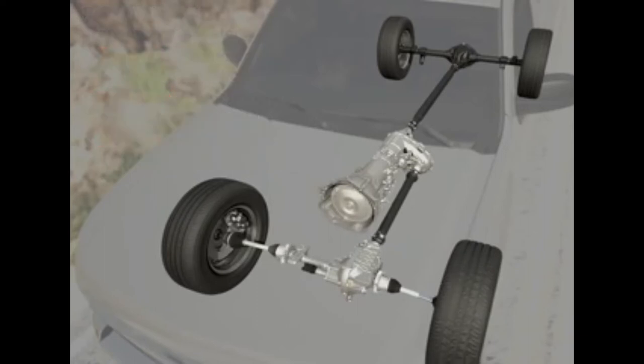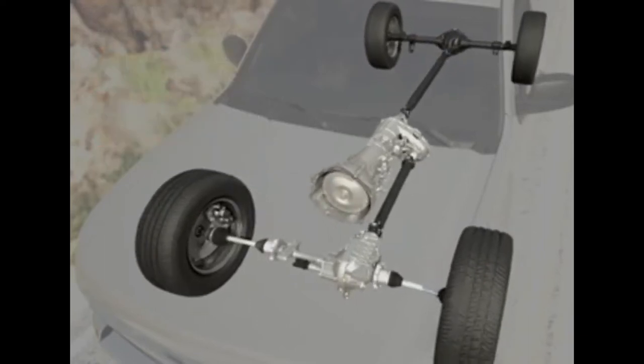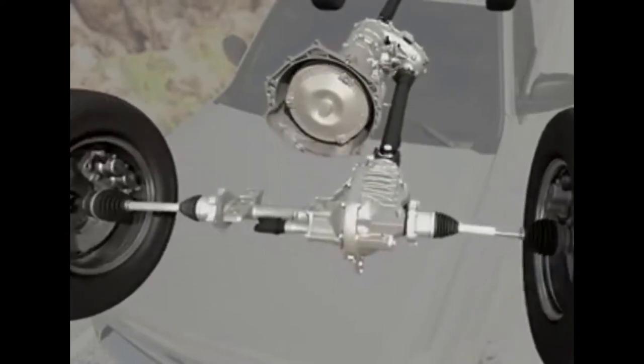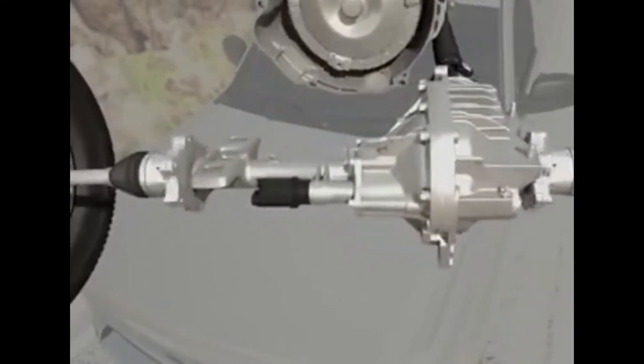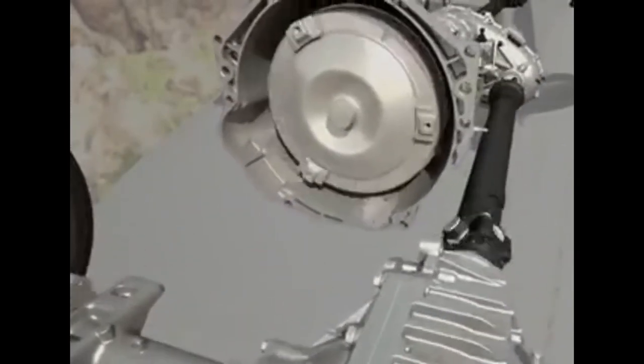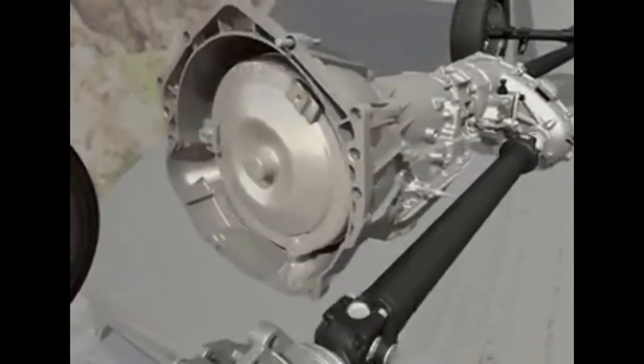Key components of the system include a transmission or transaxle, a transfer case in four-wheel drive or all-wheel drive, a propeller shaft to drive the rear axle, drive axles to drive the wheels, a clutch for manual shift, and a torque converter for automatic shift.